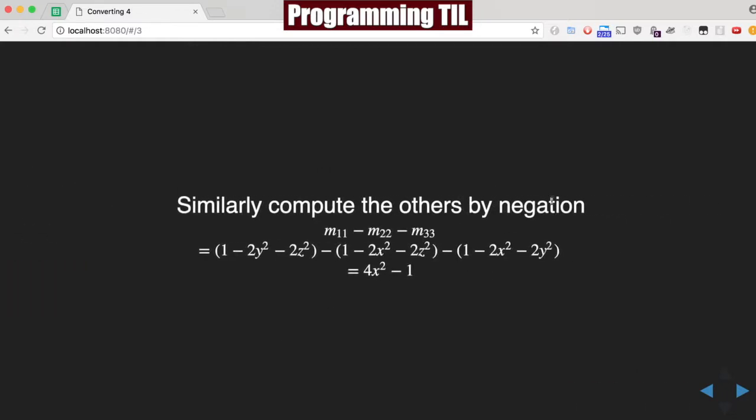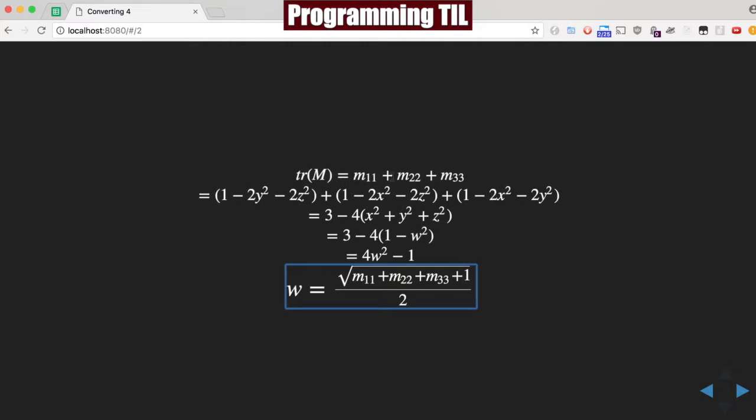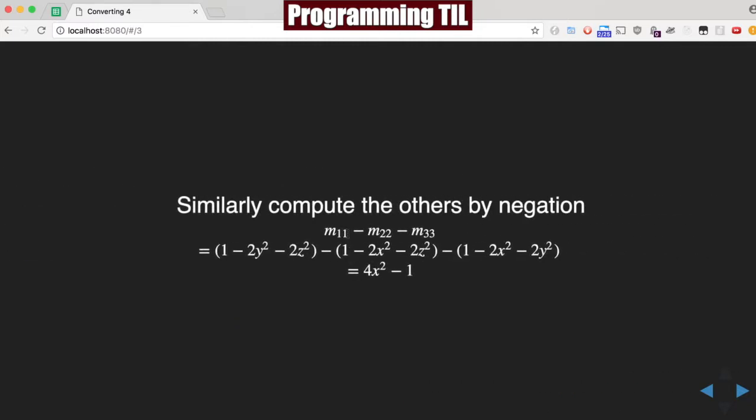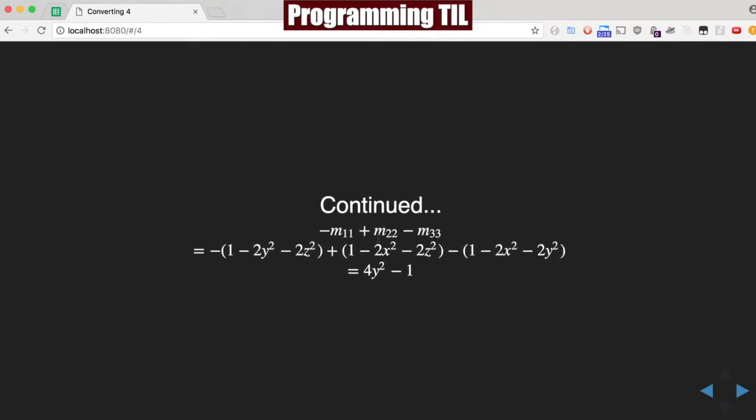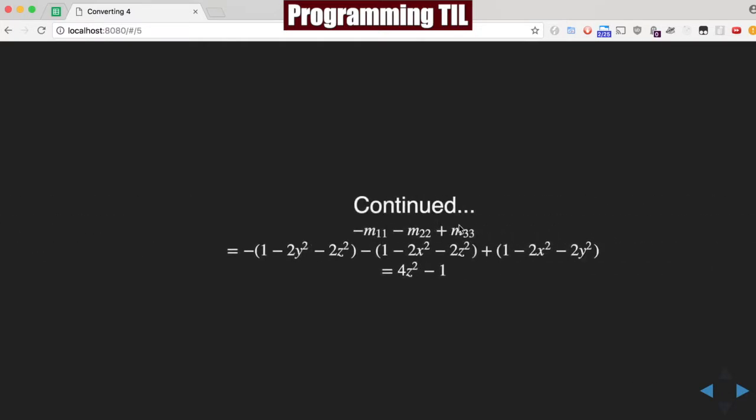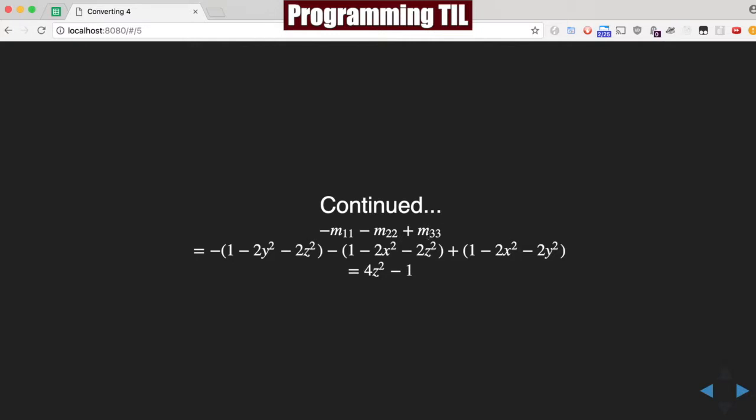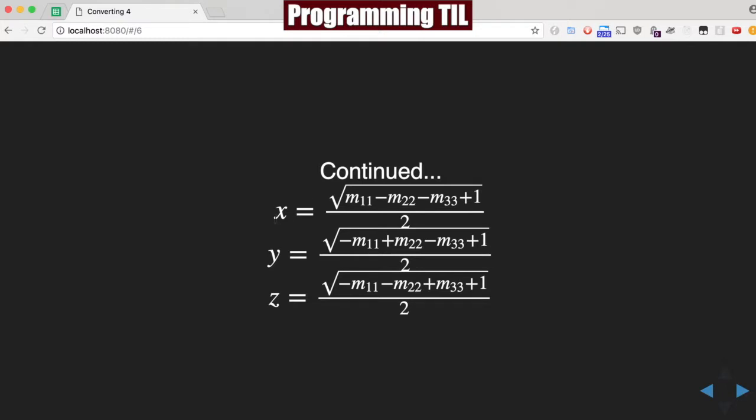Similarly, we can compute the others by negation. So if you see this is M11 plus M22 plus M33, to solve for X we're going to do M11 minus. So the X element will be the first, second one will be the Y element, so that'll be positive and negate the other two. And the last will be the third element, 33, negating the other three. So now we have each of these three formulas. A little extra spacing, you can see it's over two. So you have three formulas that represent this plus the W formula.